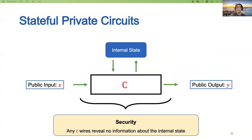In the stateful model, the circuit maintains an internal state. In each epoch, the circuit takes a public input x and outputs the result y in clear. A concrete example is an encryption circuit where the internal state is the secret key, the input is the message to encrypt, and the output is the ciphertext. The security requires that in every epoch, any T wire values should reveal no information about the internal state.